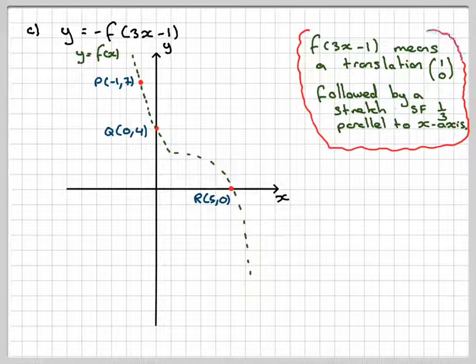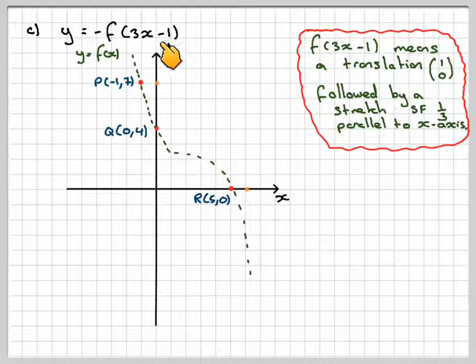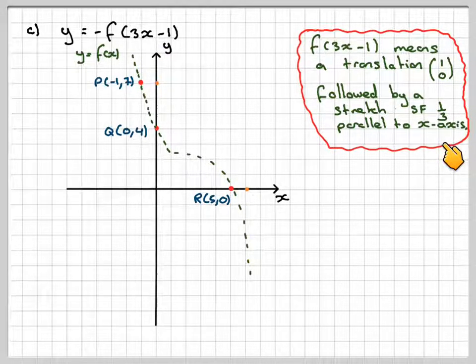One way to remember 3x minus 1, f of 3x minus 1, is how would you actually solve that to find the value of x? So you would add 1, i.e. a translation of 1, 0, and then you would divide by 3. That gives me my stretch factor, 1 third.